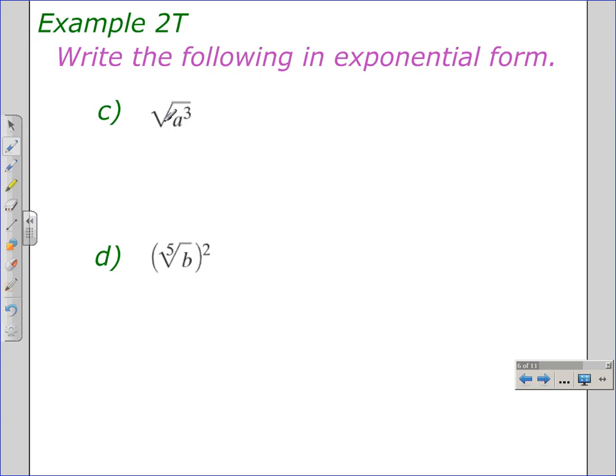Here we move to writing something in radical form in exponential form. Remember, if there is no index, the index is 2. So this is the denominator. The index is the denominator. The power is the numerator. So this would be a to the 3 halves power. Here we have the 5th root of b taken to the 2nd power. I remind you that the index is the denominator. So we'll have a denominator of 5 in our rational exponent. And the power is the numerator. So this would give b to the 2 fifths power.